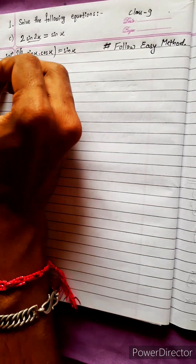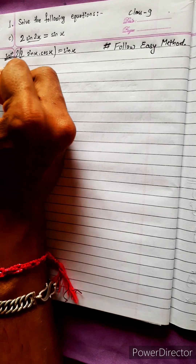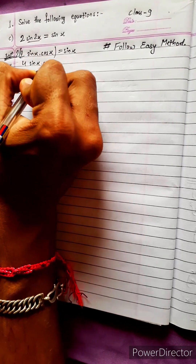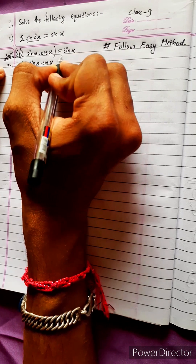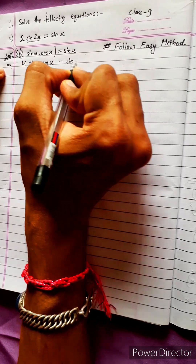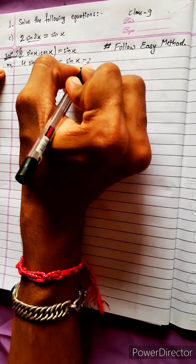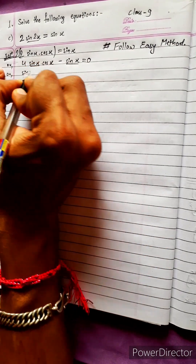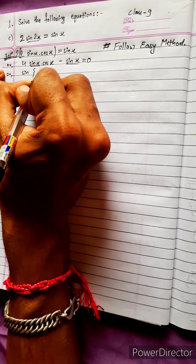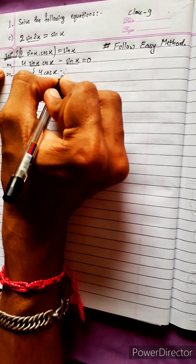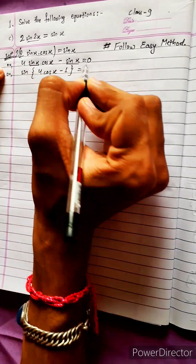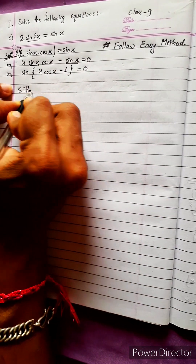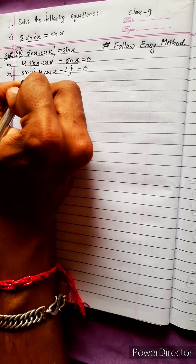So 2sinx gives us 4sinx·cosx. Then 4sinx·cosx minus sinx equal to 0. Taking sinx common, sinx times 4cosx minus 1 equal to 0.